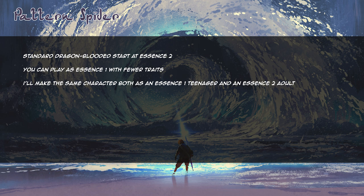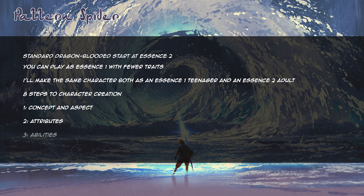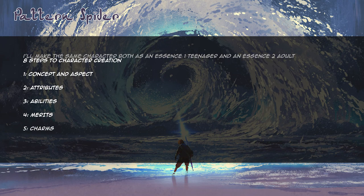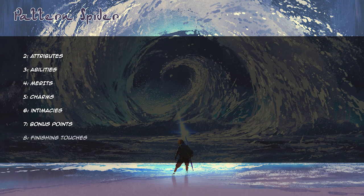This will be a dynast from one of the Great Houses. Just like when we made our Solar, there are eight steps to character creation: concept and aspect, attributes, abilities, merits, charms, intimacies, bonus points, and finishing touches. I'll go through all of them in order, starting with concept and aspect.